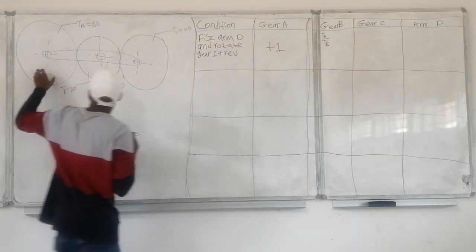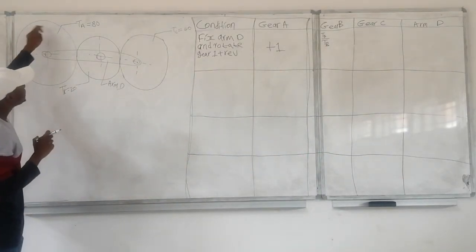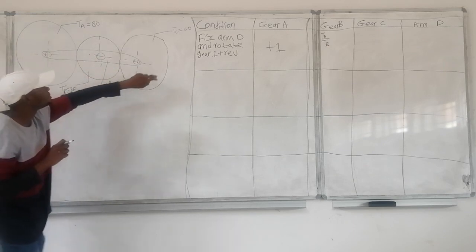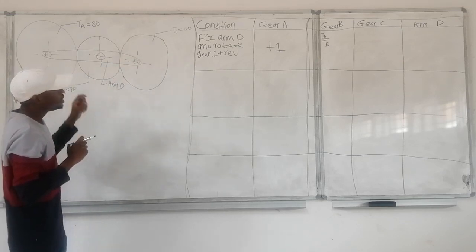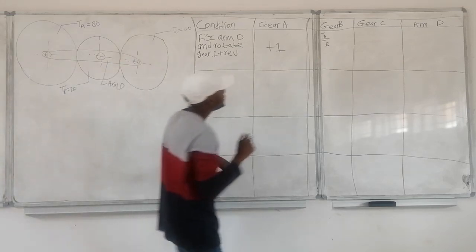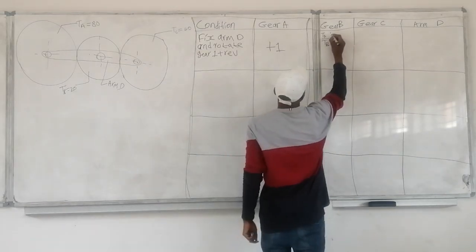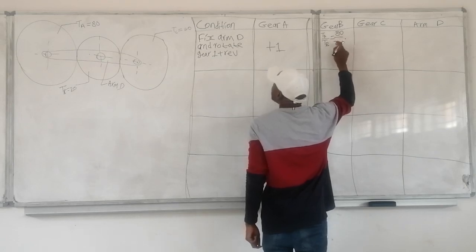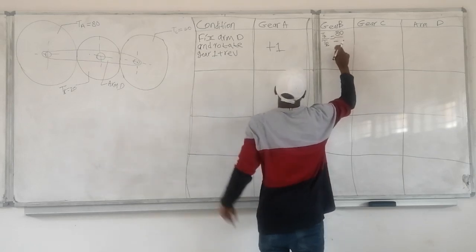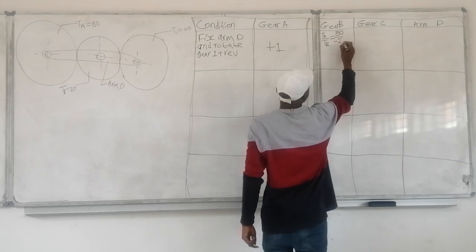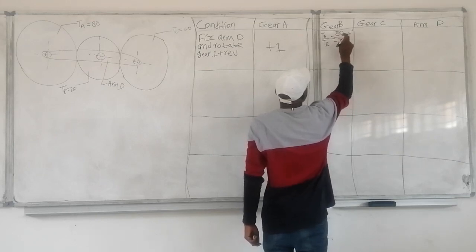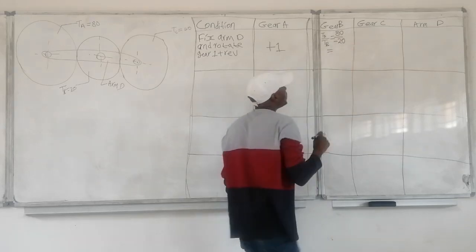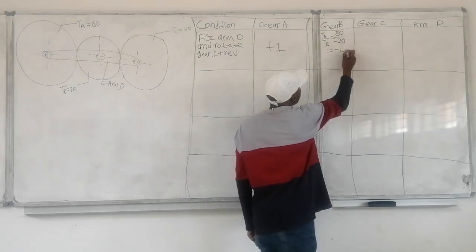As you can see here, when I rotate gear A clockwise, gear B is going to spin anti-clockwise and gear C is going to spin clockwise. The number of teeth of gear A is 80, and gear B is going to spin anti-clockwise, so it's going to be negative 20. That gives us 80 over negative 20, which equals negative 4. This negative represents the anti-clockwise direction.